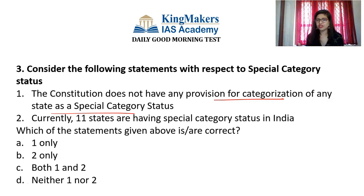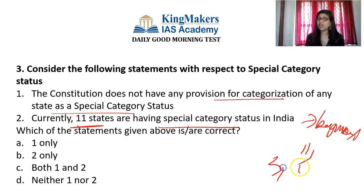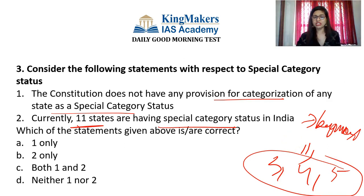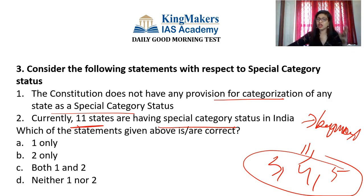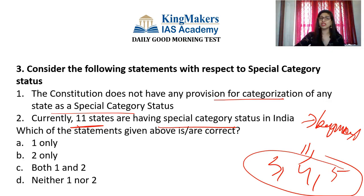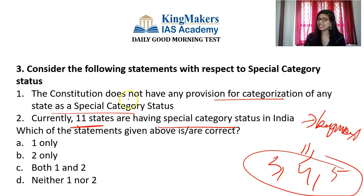The idea behind special category status is to bring up backward states. The government must ensure those states improve. For special category states, the central government pays 90% of the funds required in centrally sponsored schemes. In contrast, for normal category states, the center pays 60% and the state pays 40%. For special category states, 90% is paid by the center and only 10% by the respective state government. This is the key difference between central sector schemes — 100% funded by the center — and centrally sponsored schemes, where funding is shared.